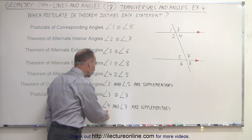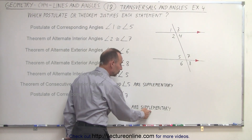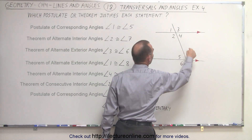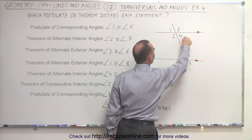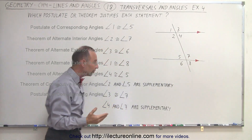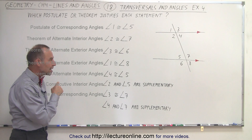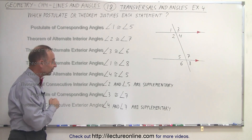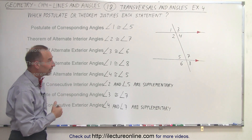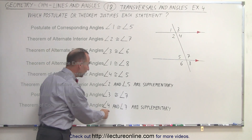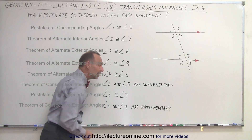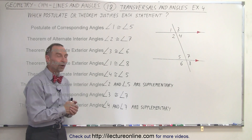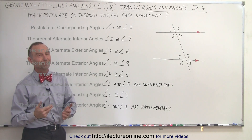Finally, angle four and angle seven are supplementary, which means their measures add up to 180 degrees. Angle four and angle seven are what we call consecutive interior angles, and by the theorem of consecutive interior angles we know that their measures must add up to 180 degrees — so therefore we can claim that they are supplementary. And that's how we know that all eight of these statements are indeed true. And that's how it's done.